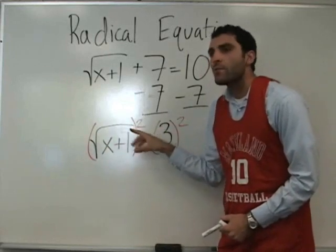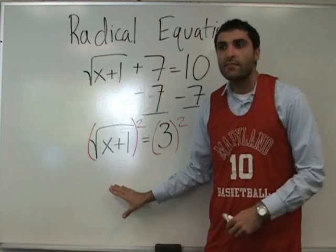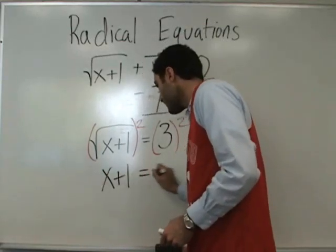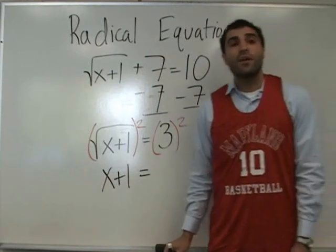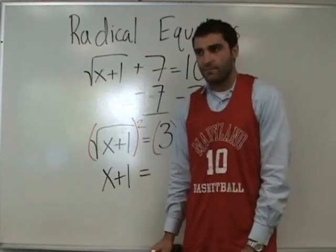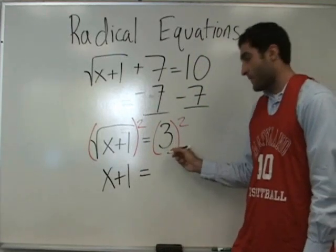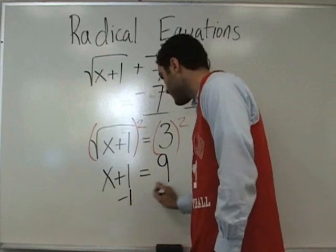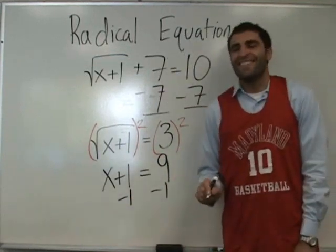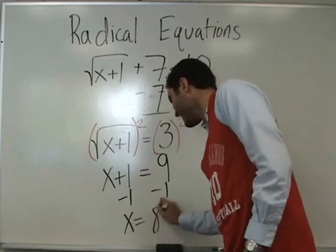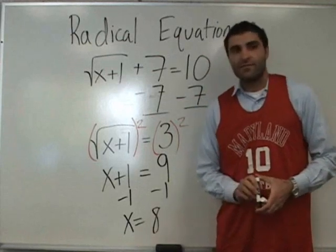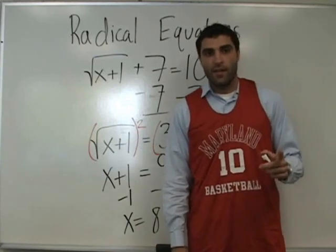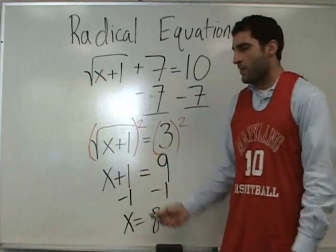When we square this square root, what's left over? Just what's inside. The square root of X plus 1 squared is X plus 1. And 3 squared becomes 9. Minus 1 on both sides, and X equals 8.